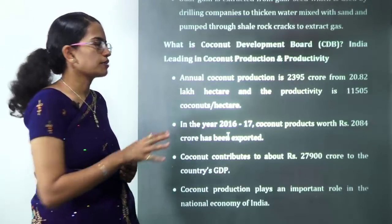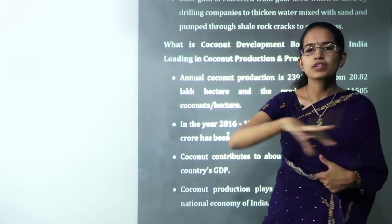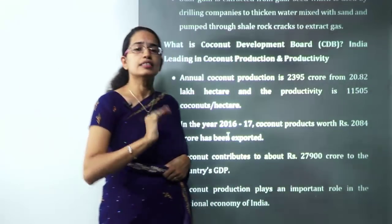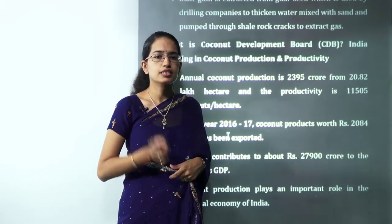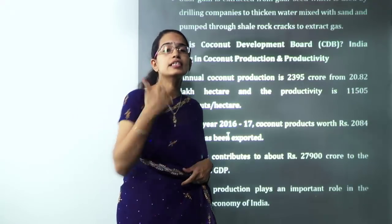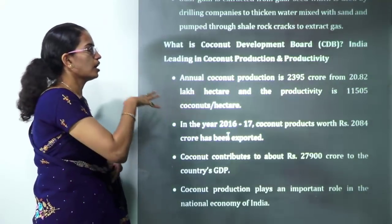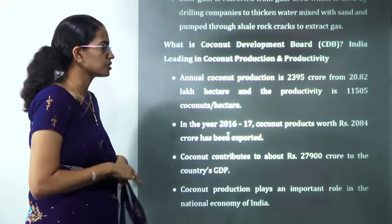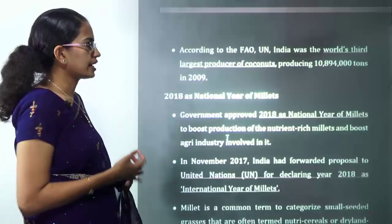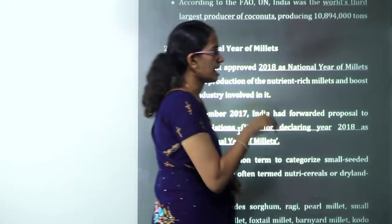A Coconut Development Board is being developed. Despite climate change causing a decline in productivity for most crops, coconut is one crop that has seen an increase in productivity. Therefore, coconut production is important in India. India has a Coconut Development Board for this purpose and is the world's third largest producer of coconut.